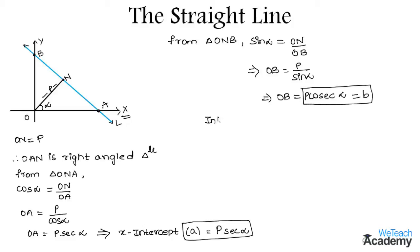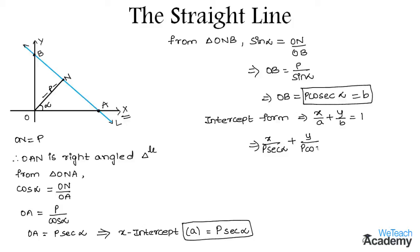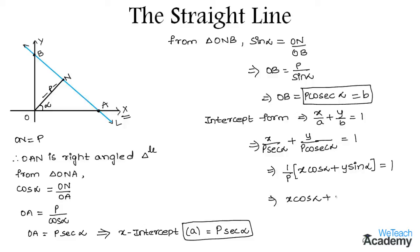So by using both the values of A and B in the intercept form of a line, which is x/A + y/B = 1, we get x divided by P·sec alpha plus y divided by P·cosec alpha is equal to 1. So that implies we can write this as (1/P)(x·cos alpha + y·sin alpha) = 1. And then by transferring P to the right hand side we get x·cos alpha + y·sin alpha = P.